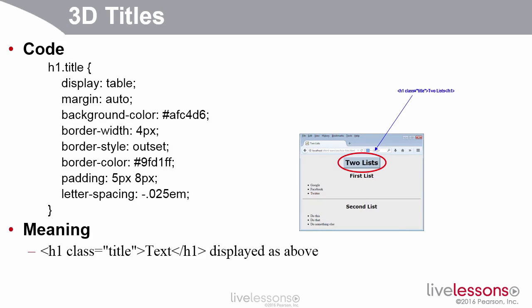You probably noticed earlier that I had a few web pages that had sort of a 3D looking title at the top. I said that H1s with the title class should have all of these properties, which basically set up the colors and the 3D border. And then I apply it by saying class equals title.